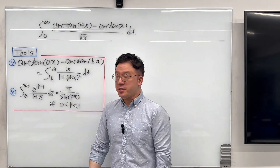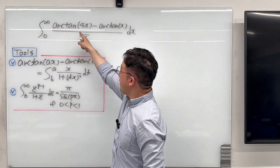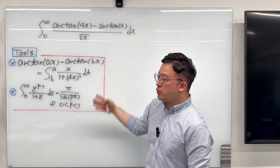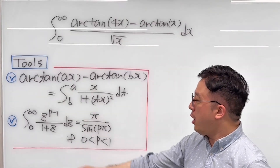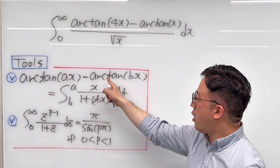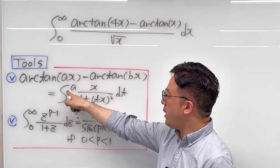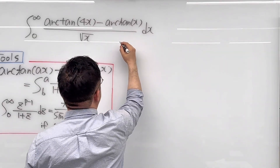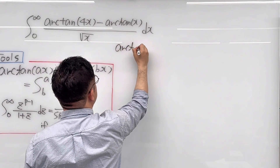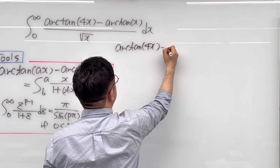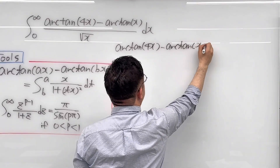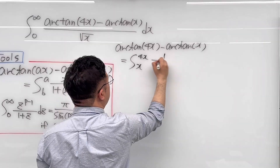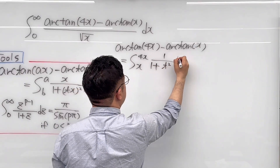Okay, here's the question. The question is to evaluate this integral from 0 to infinity of arctan(4x) minus arctan(x) over square root of x dx. I'll be using two tools to evaluate this integral. First, arctan(ax) minus arctan(bx) equals the integral from b to a of x over 1 plus t squared dt. So let's represent the numerator first: arctan(4x) minus arctan(x) is the same as the integral from x to 4x of 1 over 1 plus t squared dt.